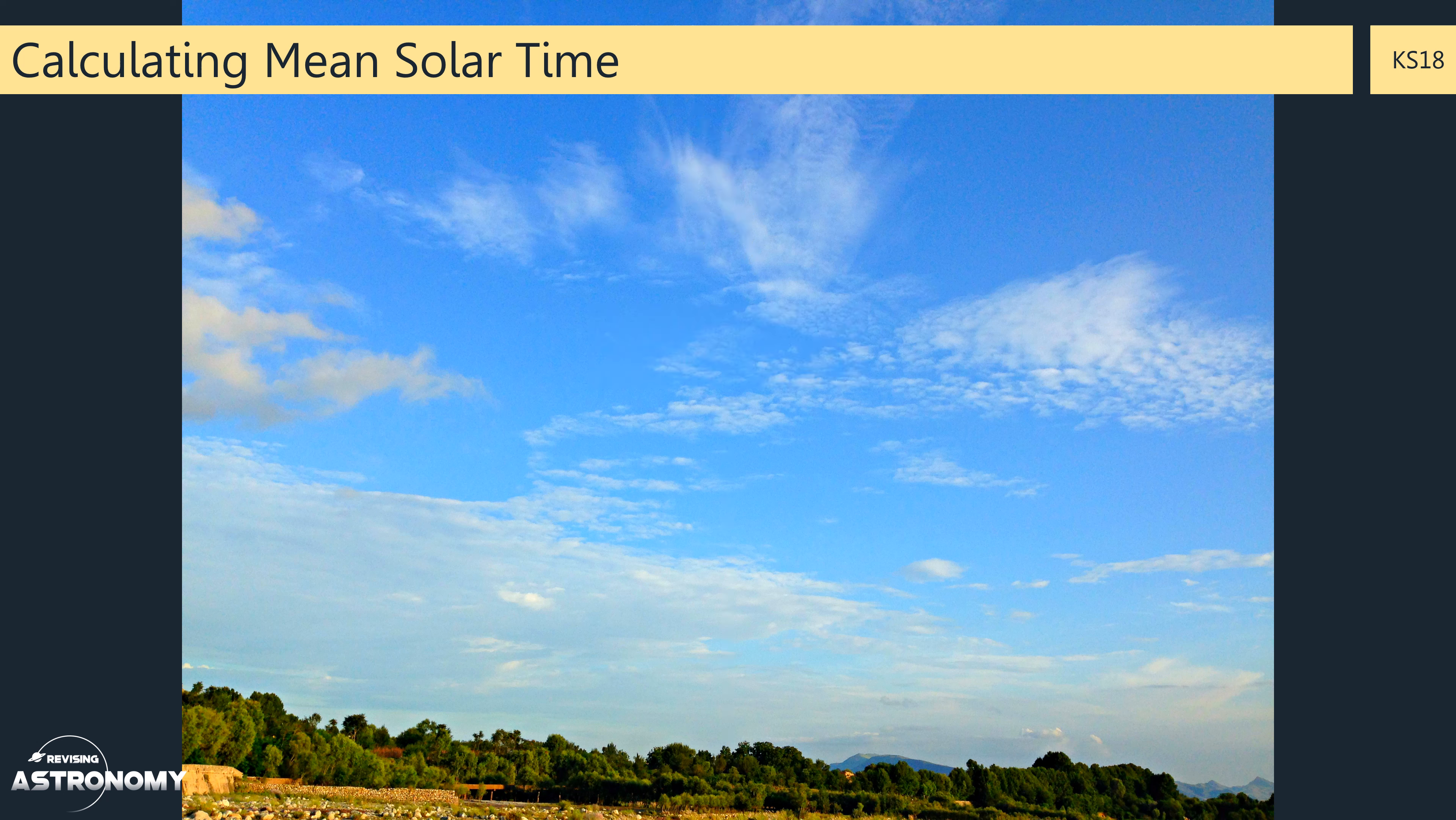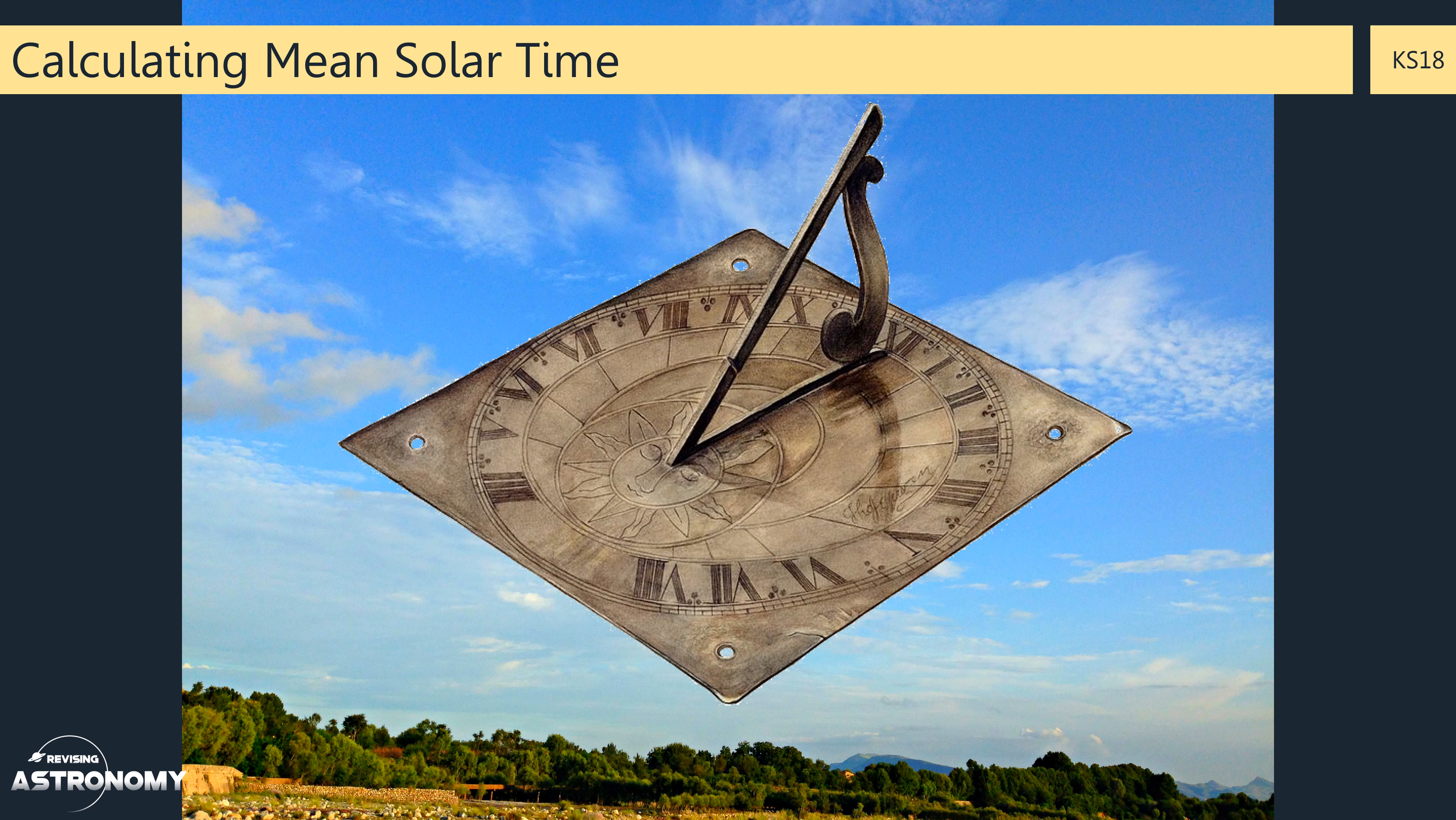This is therefore important when using a sundial to tell the time. If the Sun is running fast or slow that day, you need to be able to correct for this to establish exactly what the mean solar time is. The sundial will not directly tell you this. The sundial will tell you the time from the actual Sun in front of you, regardless of whether it's running fast or slow. And this time is called the apparent solar time.